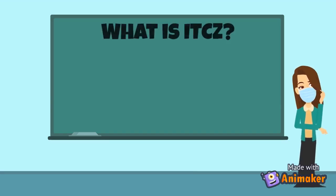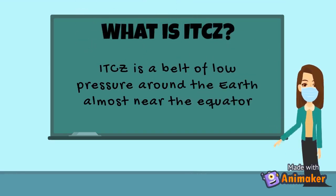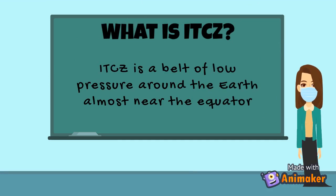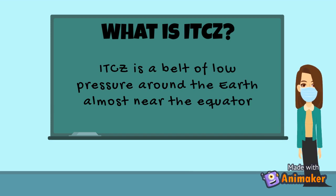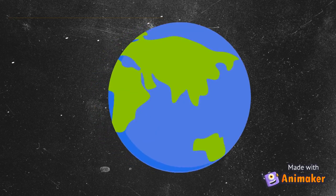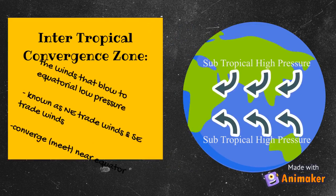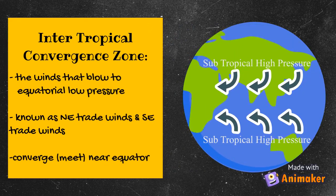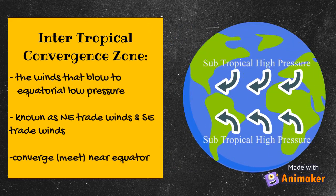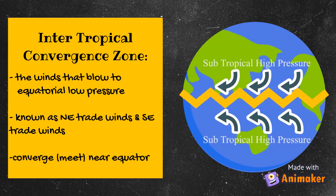What is ITCZ? The Intertropical Convergence Zone, also known as ITCZ, is a belt of low pressure encircling the earth almost near the equator. The winds, known as trade winds, are blowing from subtropical high pressure and they converge near the equatorial low pressure, which creates the ITCZ.